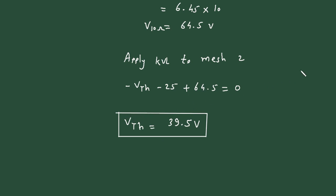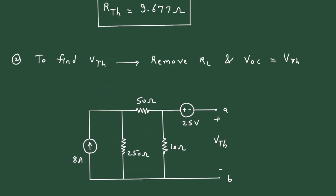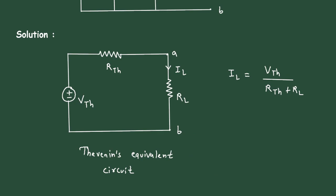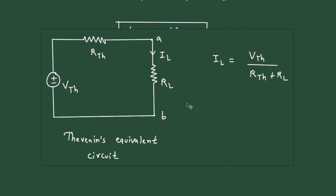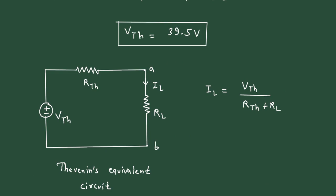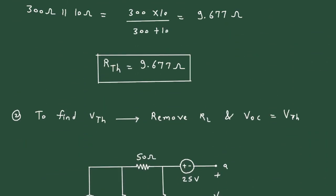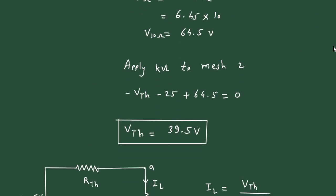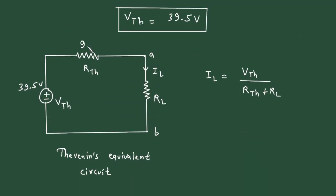Now we have the value of Vth and Rth, so we can draw the Thevenin equivalent circuit. Substituting the values: Vth = 39.5 V and Rth = 9.677 Ω. This is our final Thevenin equivalent circuit.